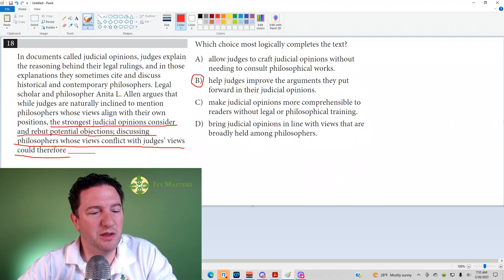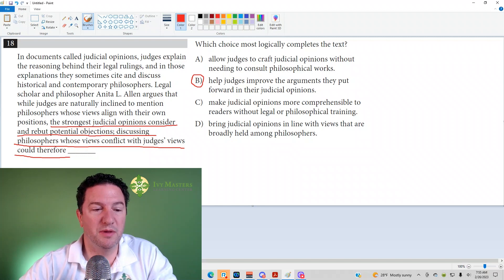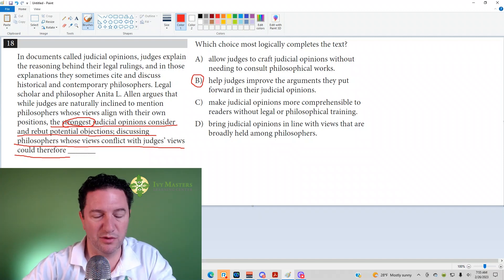Because it's basically what it's saying before the semicolon. If strong judicial opinions consider and argue against the possible objections, they describe that as strongest. So that's going to improve the argument if they're doing that, which is what it's saying after the semicolon.